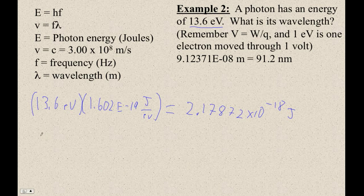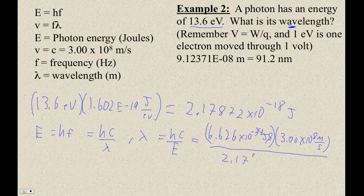And now we want to solve for the wavelength. So to solve for the wavelength, I'm going to use E is hf is hc over lambda. So therefore, lambda is hc over E. So it's 6.626 times 10 to the minus 34th joules times 3.00 times 10 to the 8th meters per second divided by 2.17872 times 10 to the minus 18th joules.